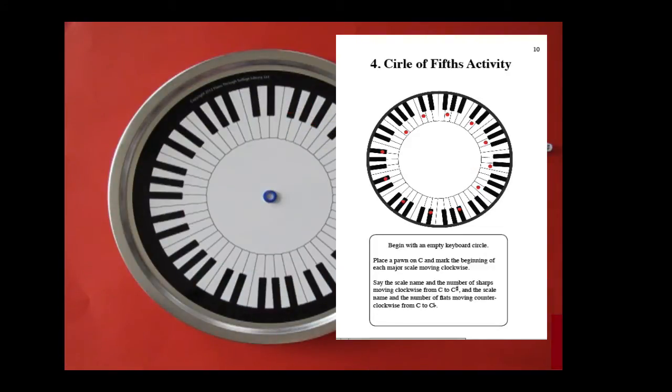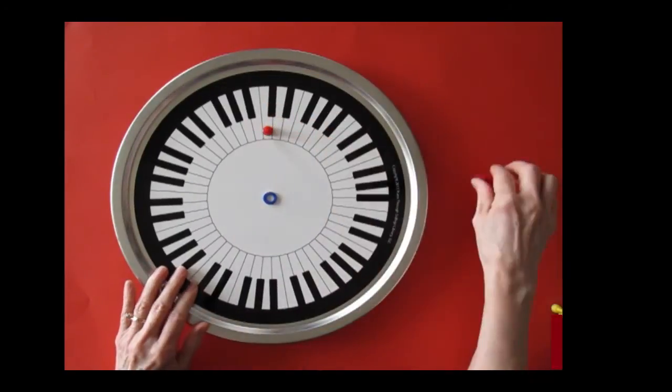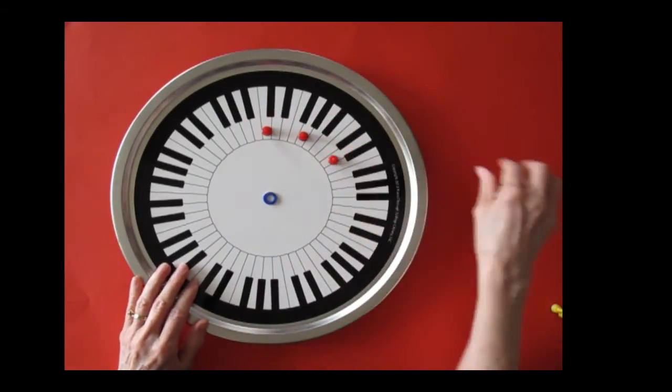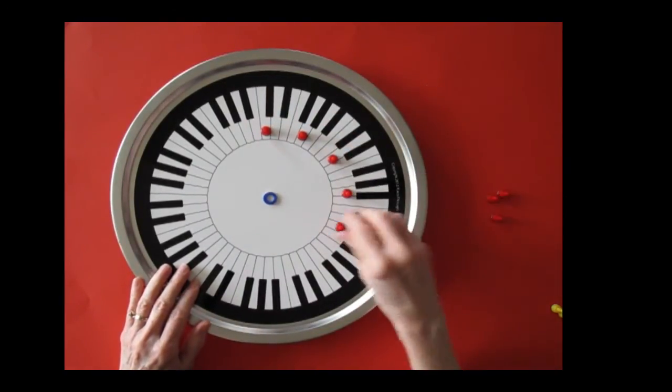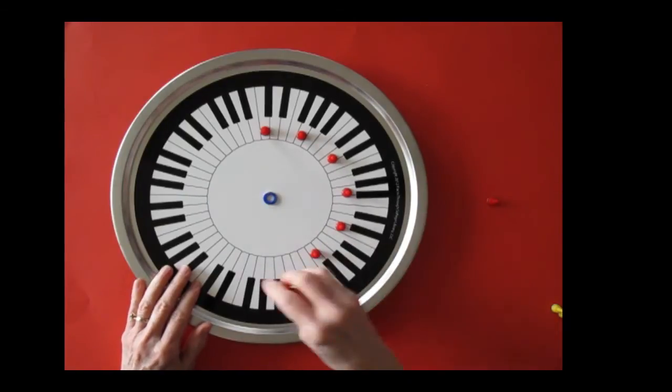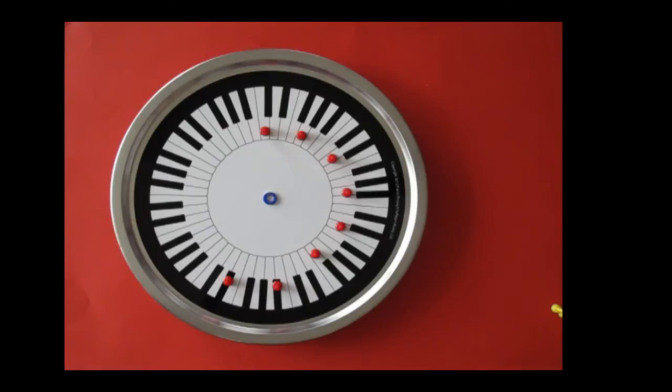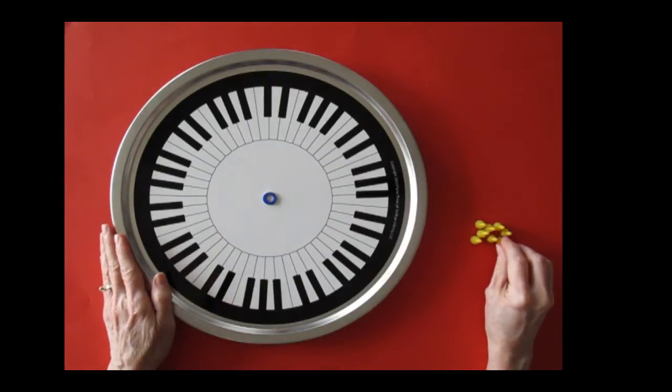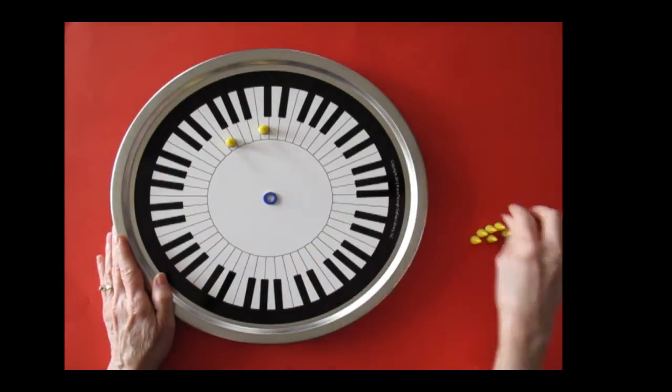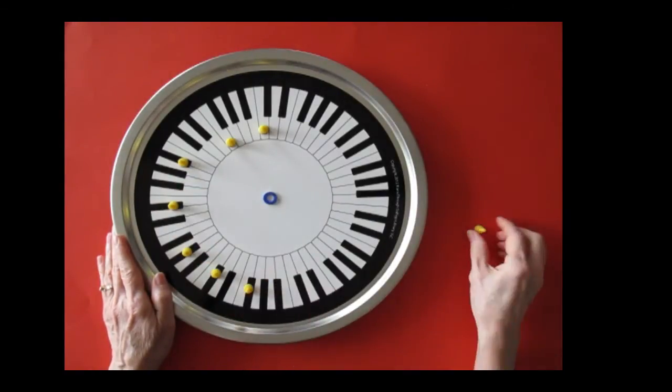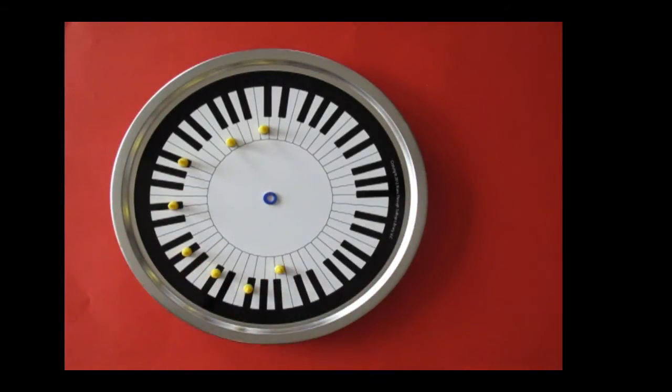Circle of fifths activity. Begin with an empty keyboard circle. See how fast you can make perfect fifths from C to C sharp, saying the names of the major scales with sharps. Going the other direction, make perfect fifths from C to C flat for major scales with flats.